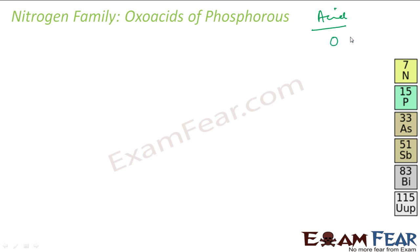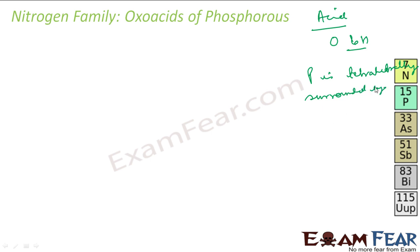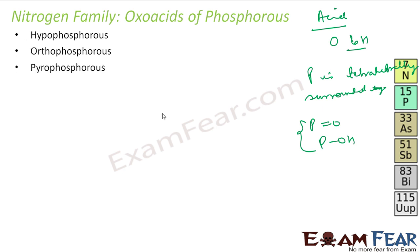In all these cases you'll see phosphorus is tetrahedrally surrounded by other atoms. So it will have a P=O bond and at least one P-OH bond — that is my oxo acid.